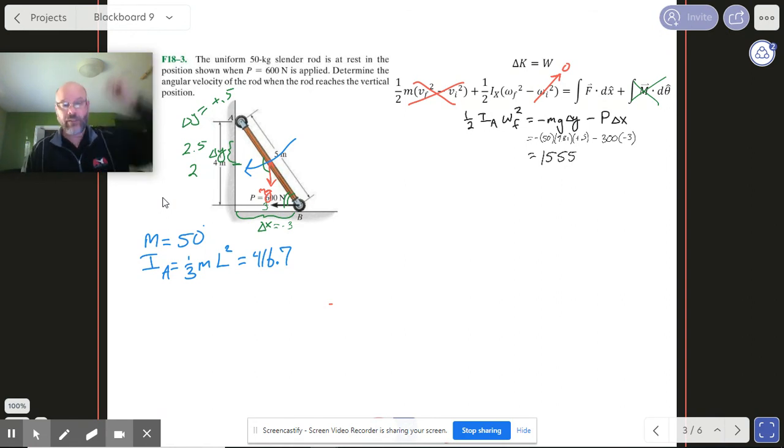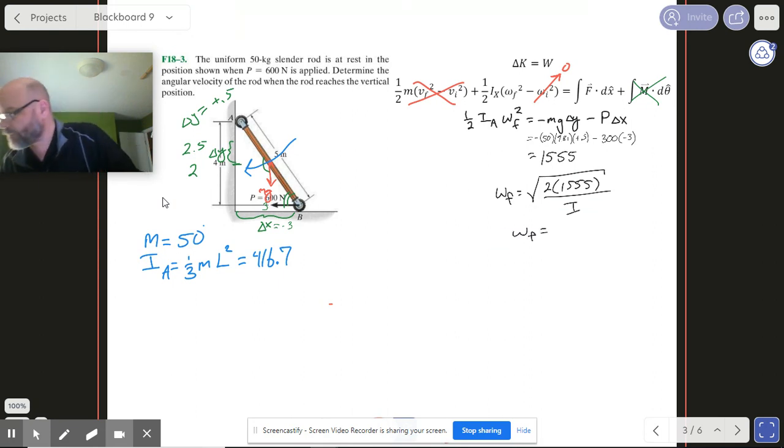So my final omega, all right, I'm gonna have the same expression: 2 times the work divided by I. And when you run all those numbers you're gonna get 2.732 radians per second. Okay, piece of cake.